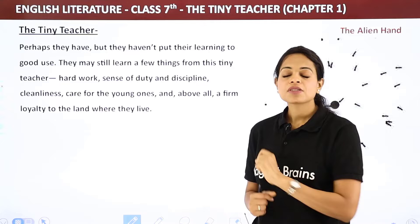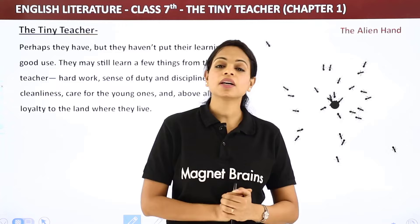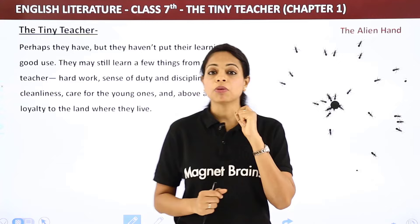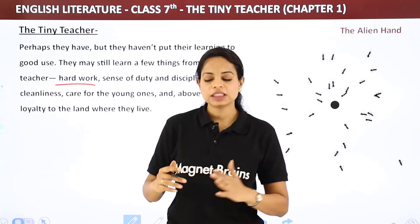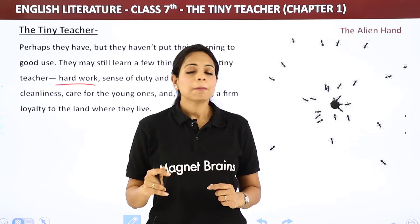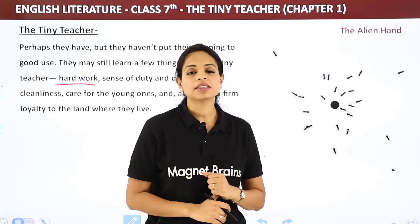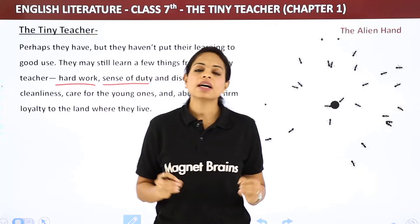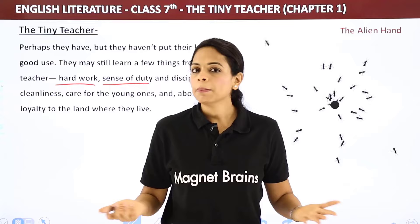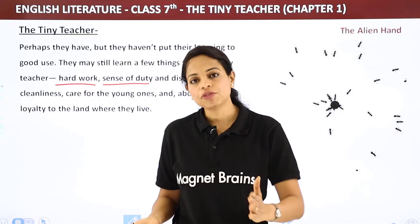Hard work — there are many stories about an ant climbing up a mountain, slipping, climbing again, never losing patience. It keeps going until it reaches the top. Sense of duty — you must do what has been given to you; no excuses. And discipline — there has to be a time to wake up, sleep, eat, play, and complete homework. We are supposed to do things in order.